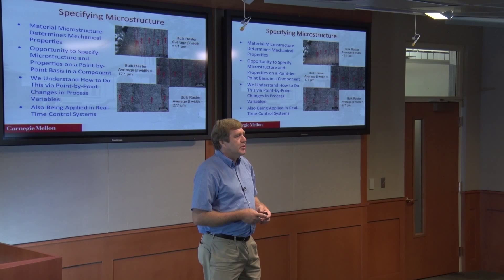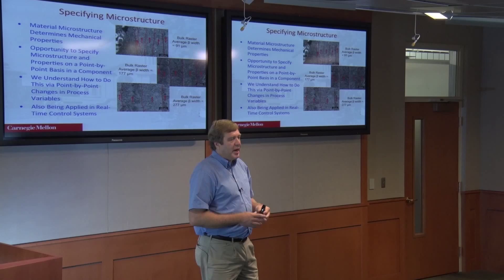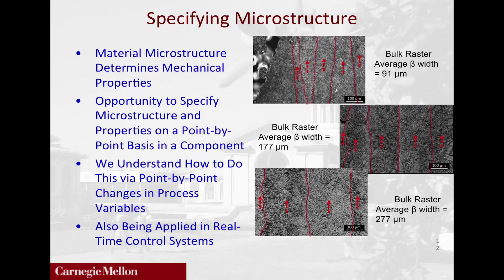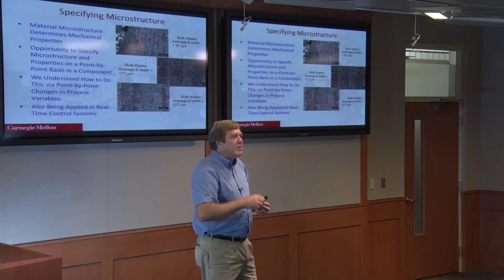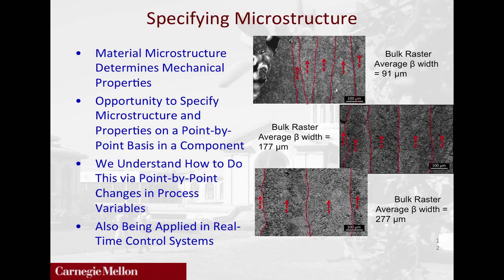Another key issue is microstructure. A key opportunity with additive manufacturing is you can now specify microstructure — specifying material properties at every location in a part as it's being built up. Nobody really knows how to do that except us, and we're still developing our techniques, but we've started to crack the code on how to control the size of microstructural features as a function of process variables. These micrographs are transmission electron microscopy images of grains in the metals. We start out with a grain width of 91 microns, and we can prescribe process variables to essentially double that or triple those sizes. With respect to controlling mechanical properties, that's essential.